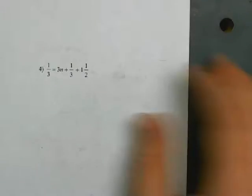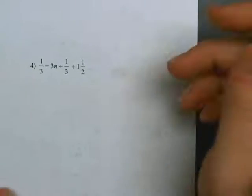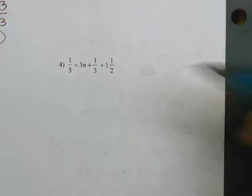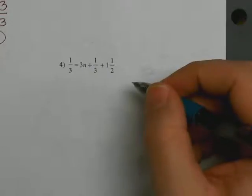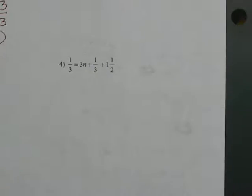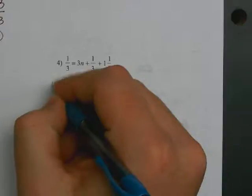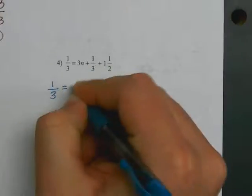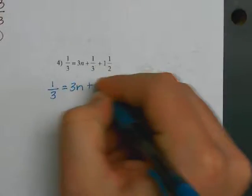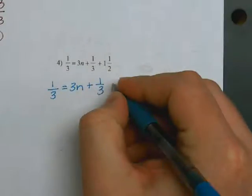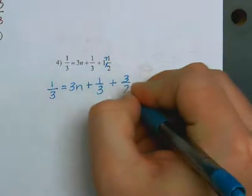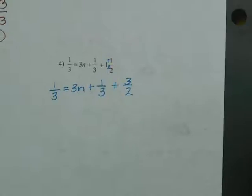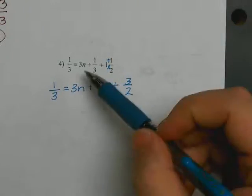Looking at number four: one-third equals three-and-something plus one-third plus one-half. Your very first step is to convert all mixed numbers to improper fractions. So we have one-third equals three-and — bringing everything down — plus one-third, plus two times one is two, plus one is three, so three-halves.